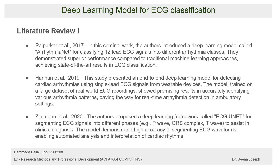We are going to discuss some important works done in recent years related to these topics. An article published by Raspurkar in 2017 introduced a deep learning model called ArrhythmiaNet for classifying 12 leads into different arrhythmia classes. This model managed to achieve very high accuracy compared to traditional artificial intelligence approaches.